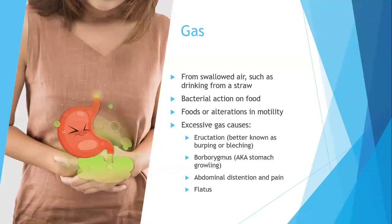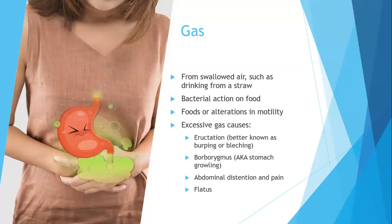Gas can result from swallowed air — like drinking through a straw — bacterial action on food, certain foods, or altered digestive motility from drugs or sympathetic nervous system effects. Excessive gas can cause eructation (burping), borborygmus (stomach growling), abdominal distension and pain, or flatus. The type that most bothers people is abdominal distension and pain, and there are over-the-counter medications to treat that.